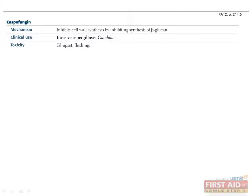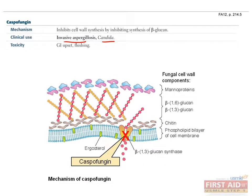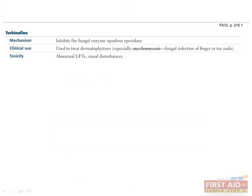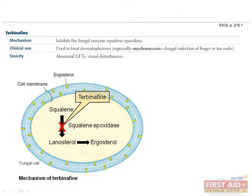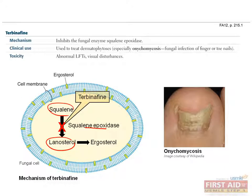The use of caspofungin is limited to treating invasive aspergillosis and candida infections. This medication inhibits cell wall synthesis by inhibiting beta-glucan synthesis. Terbinafine inhibits squalene epoxidase, which blocks conversion of squalene to lanosterol. Terbinafine is used to treat dermatophytoses, particularly onychomycosis. Its toxicity includes abnormal liver function tests and visual disturbances.